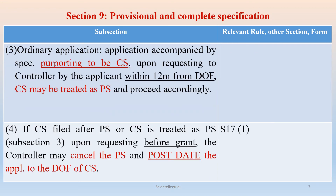Subsection 3 under Section 9: In case of an ordinary application — that is, not a Convention or PCT application — an application accompanied by a specification purporting to be a complete specification (CS), upon requesting to the controller by the applicant within 12 months from the date of filing, that complete specification may be treated as a provisional specification and proceed accordingly. That means an applicant may, within 12 months from the filing of the complete specification, convert the same into a provisional specification. Consequently, the applicant has to file a complete specification within 12 months from the date of first filing.